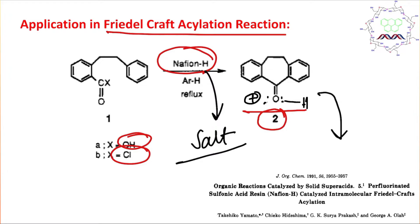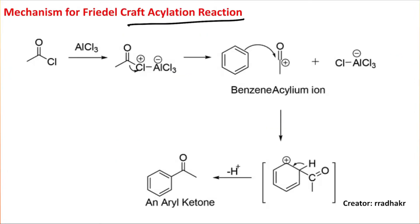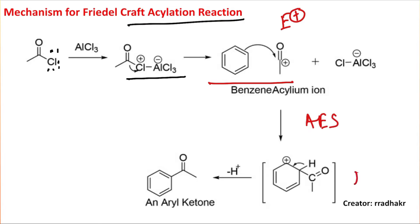Before going to the mechanism, let us review the basics of Friedel-Kraft acylation. This reaction occurs in the presence of a Lewis acid like AlCl₃, which coordinates to the aluminum center. The Lewis acid adduct generates an acylium cation, which acts as the electrophile. It reacts with benzene through aromatic electrophilic substitution, forming a sigma complex, which then eliminates a proton to regain aromaticity, ultimately producing an aryl ketone.